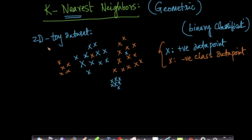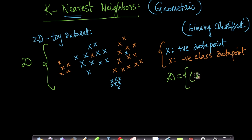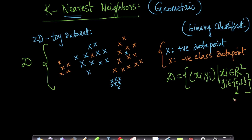Now, let us assume this whole set of points that we have here is my dataset capital D. My capital D is a dataset of pairs (xi, yi), where xi belongs to R² because this is two-dimensional data, and yi belongs to two classes — 0 and 1. So 0 is my negative class and 1 is my positive class. My negative class is the red points and my positive class is the blue points.